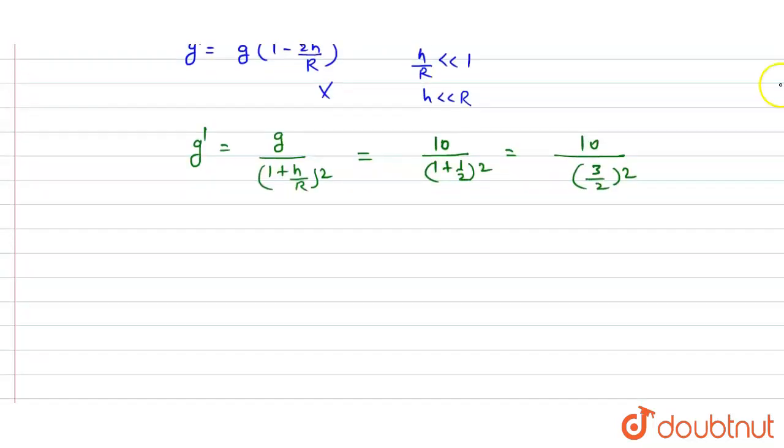So its value comes out that is g dash is equal to 10 divided by 9 into 4, and this is 40 divided by 9, and its value comes out that is written as 4.44 meters per second squared.